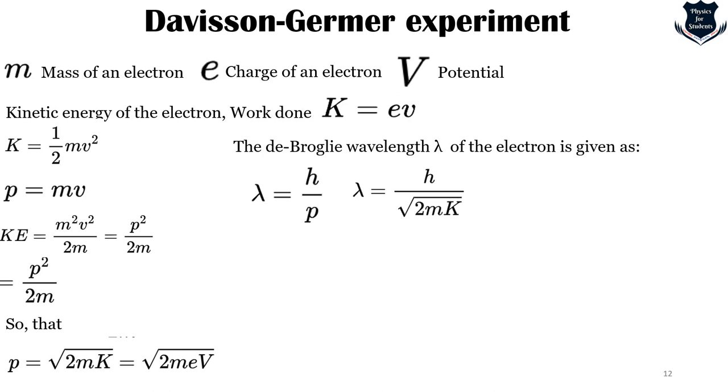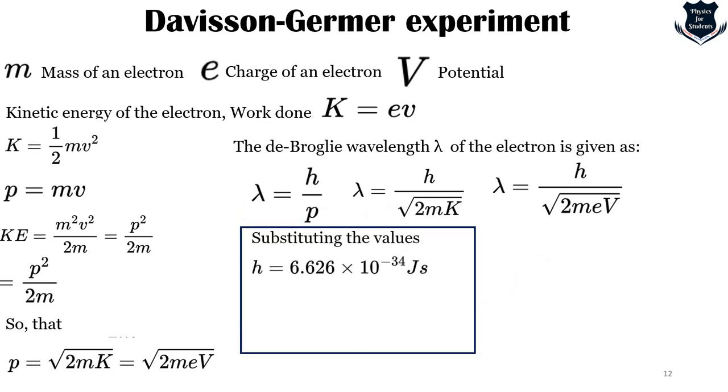The de Broglie wavelength lambda of the electron is given as lambda equals h upon p. From here, substituting the value of p as the square root of 2mK, we get lambda equals h upon the square root of 2meV. Substituting the values of h, which is Planck's constant, with the mass of the electron followed by the charge of the electron in coulombs, we get the value as 1.227 upon the square root of V nanometers.